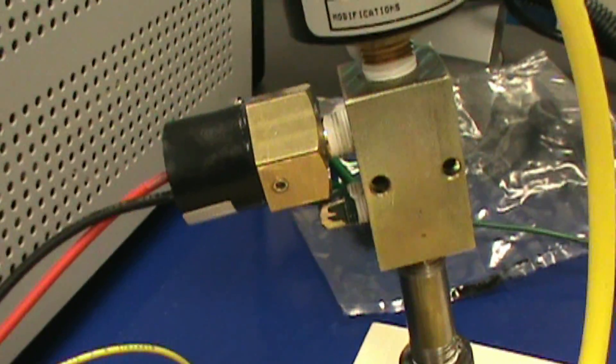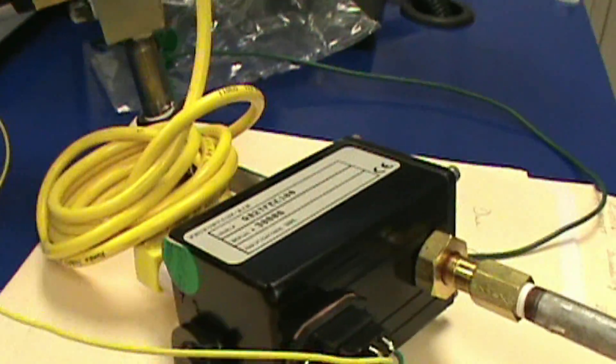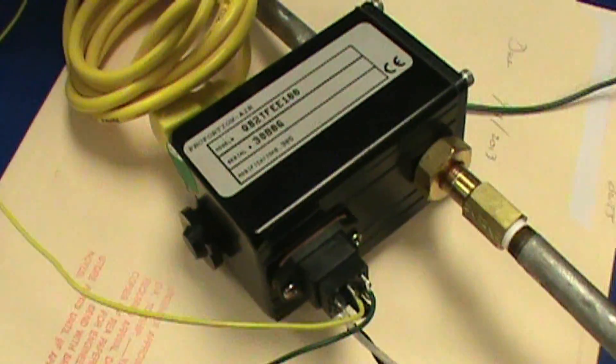On this manifold we have the pressure switch. Above it is a pressure transducer which goes to this proportional air controller.